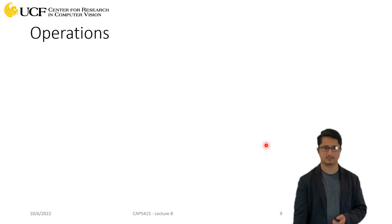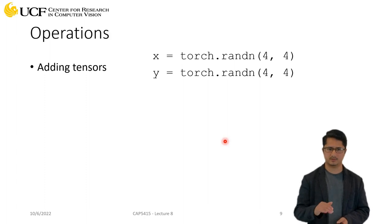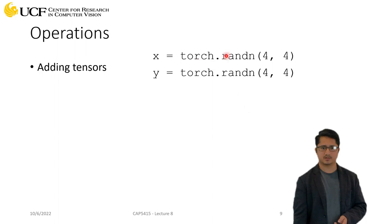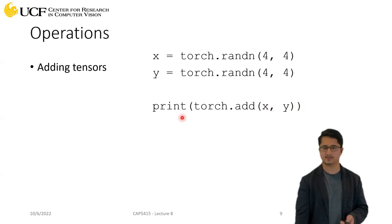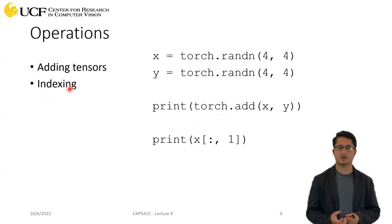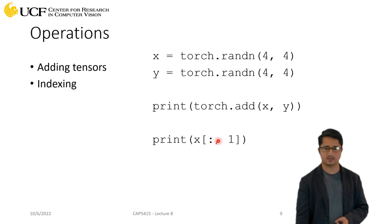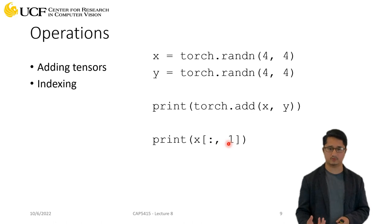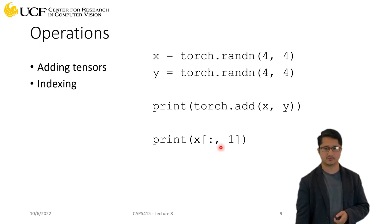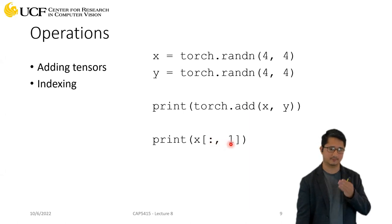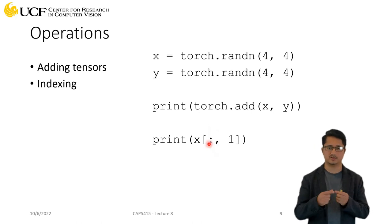For basic operations: given two tensors, you can add them using torch.add and passing them as arguments. Indexing works just as in Python — for example, if x is a 4×4 matrix, you can index the first dimension and take all values in the second dimension, which gives you a one-dimensional vector with four values.